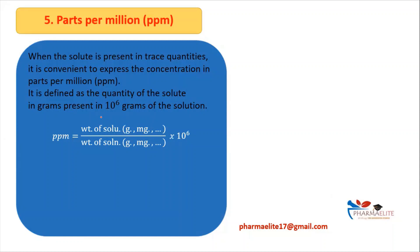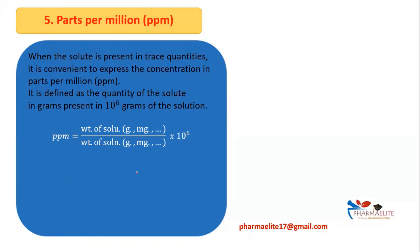The formula for ppm is: weight of solute in grams / weight of solution in grams × 10⁶. If we are taking weight of solute in mg, then weight of solution should also be taken in mg, and multiply by 10⁶. Another formula is for solid-solid solution — for example, alloys.